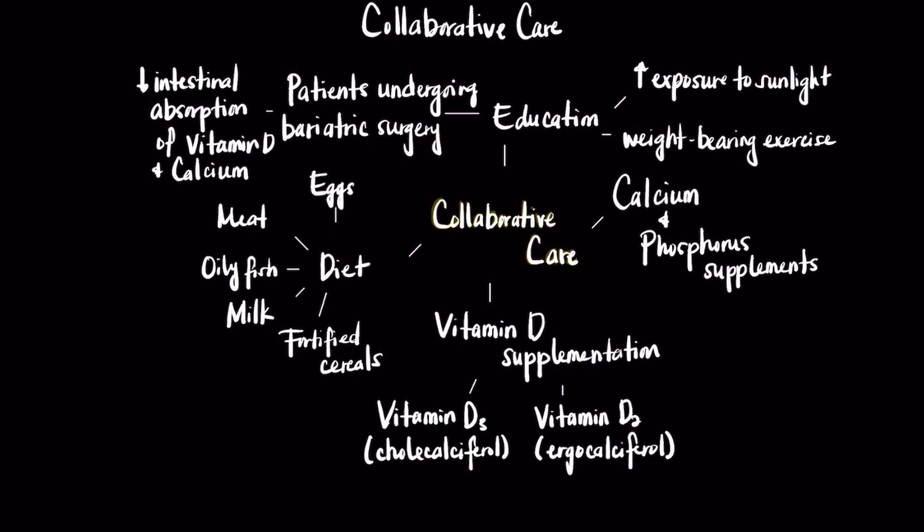With regard to treating osteomalacia, you would provide calcium and phosphorus supplements as well as vitamin D, as these levels will be low when you see a patient's labs. Also remind patients to increase their dietary intake of eggs, meat, oily fish, milk, and fortified cereals, as these can reverse low levels of calcium, phosphorus, and vitamin D.